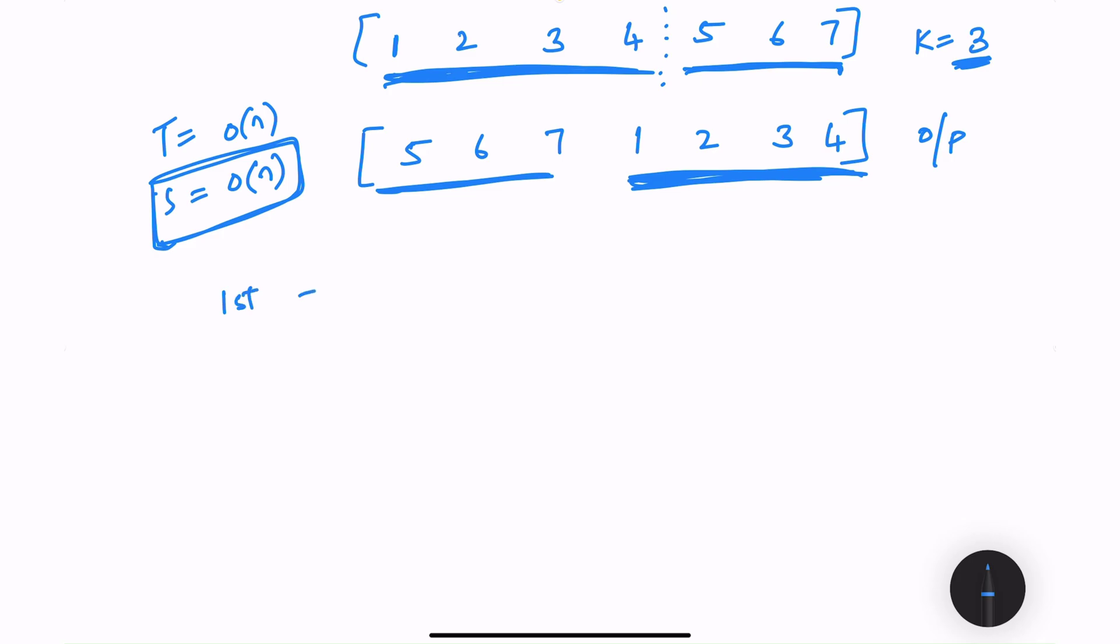Now if using this value of k, we can split this array into two sections. 7, 6, 5 will be the first section and 4, 3, 2, 1 will be the second one.